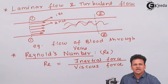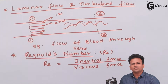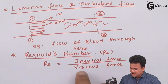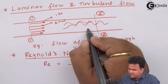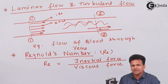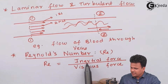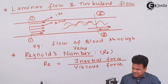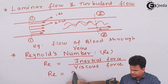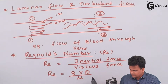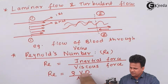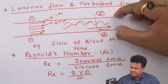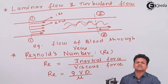Inertial force is the force applied by a body to remain in its state of motion or rest. Viscous force is the force applied in the direction opposite to the flow — for example, if the liquid flows to the right, viscous force acts to the left. Reynolds number equals rho times V times D divided by mu, where rho is the density of the fluid, V is the velocity, D is the hydraulic diameter, and mu is the viscosity of the fluid.